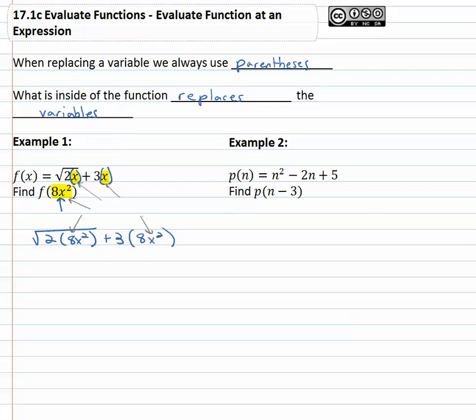Now all we have to do is simplify what's left. We can do some multiplication giving us the square root of 2 times 8 is 16x squared plus 3 times 8 is 24x squared.